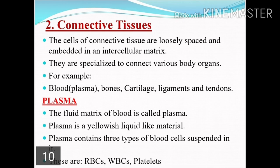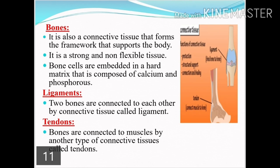The second type of animal tissue is connective tissue. As the name suggests, these tissues are loosely spaced and work to connect body organs — such as blood, plasma, bones, cartilage, ligaments, and tendons. Plasma is the fluid matrix of blood — a yellowish liquid that contains blood cells (RBCs, WBCs, and platelets) suspended in it. Bones are also an example of connective tissue; they form the framework that supports the body. Bones are strong and non-flexible, and bone cells are embedded in a hard matrix made up of calcium and phosphorus.